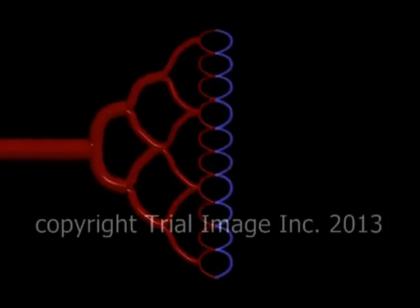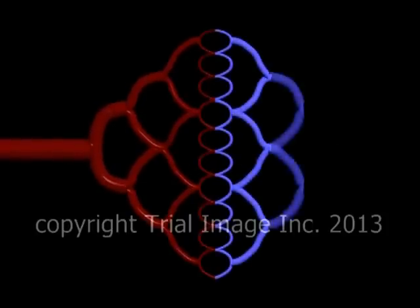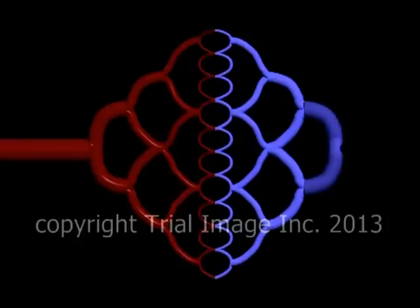On the venous side of the system, capillaries interface with tiny venules, which join together to form larger and larger veins.